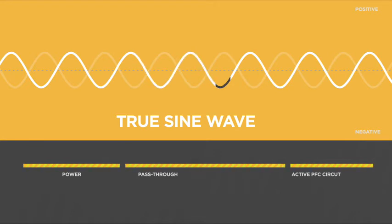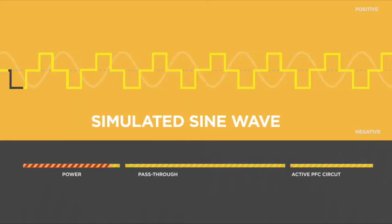Utility power arrives as a sine wave—a smooth, continuous movement between positive and negative polarity. Devices with active PFC circuits are designed to work best with sine wave input. Many UPS batteries produce a simulated sine wave output, which approximates the shape of a true sine wave but with moments of zero voltage as the polarity changes.